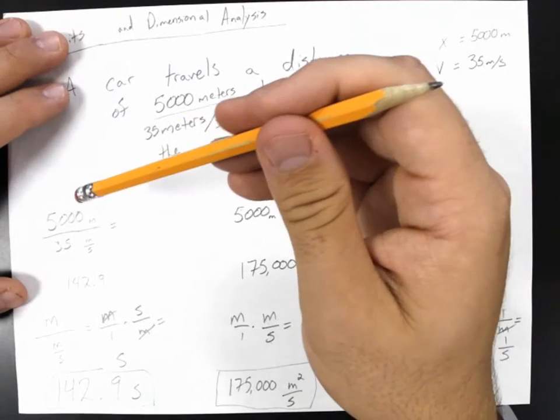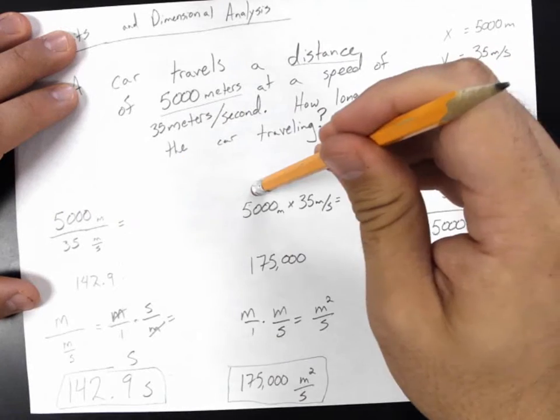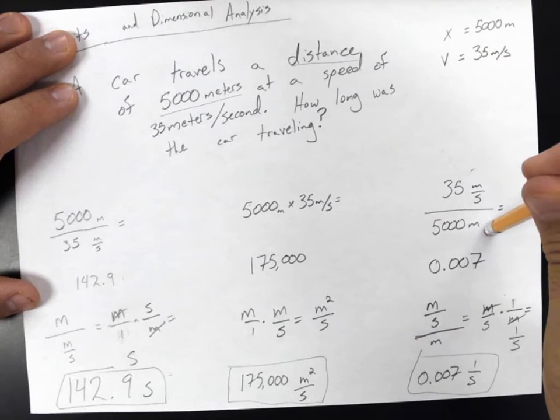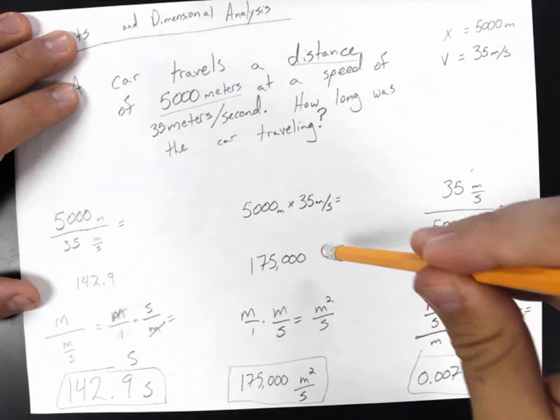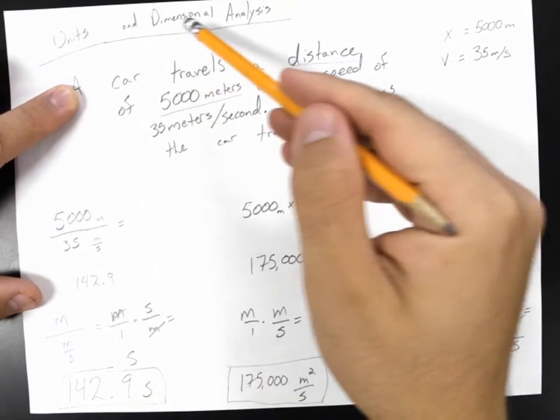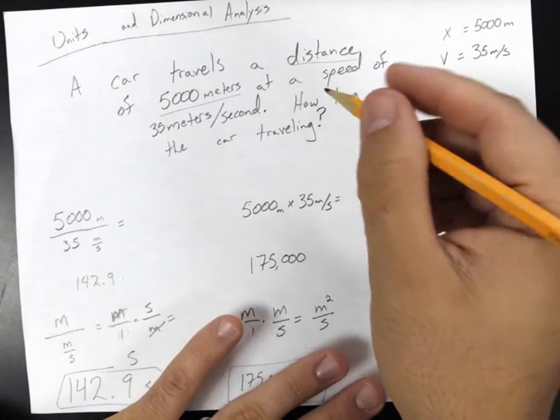So there are three ways that this problem can work out. We've got either you take the distance divided by the speed, you got the distance times the speed, or you got the speed divided by the distance. Now this gives us three completely different numerical answers. However, using units and dimensional analysis, we can solve for this problem based on just context clues alone.